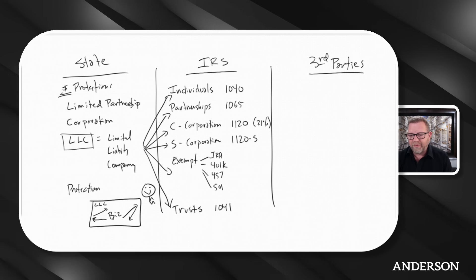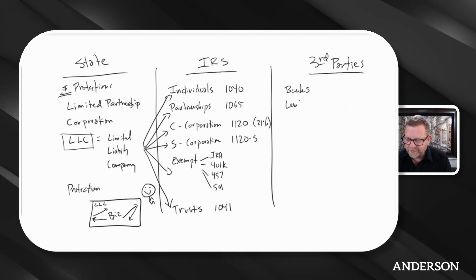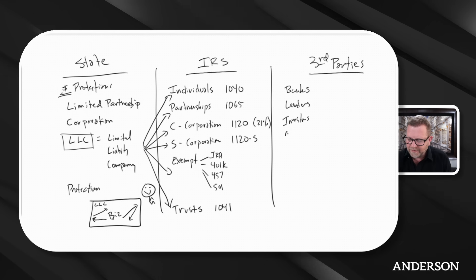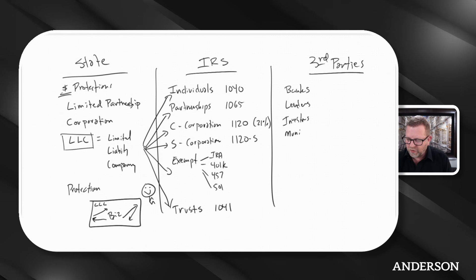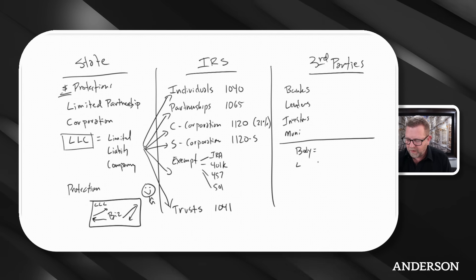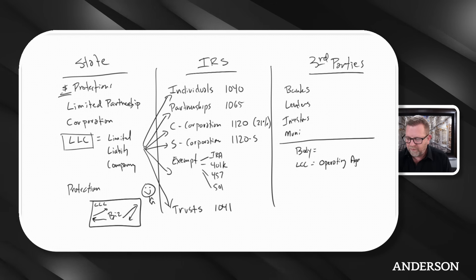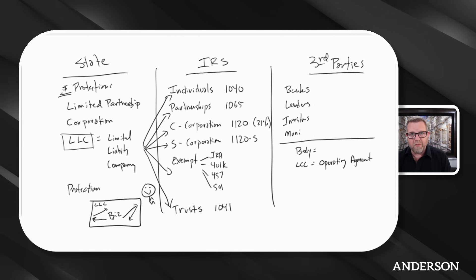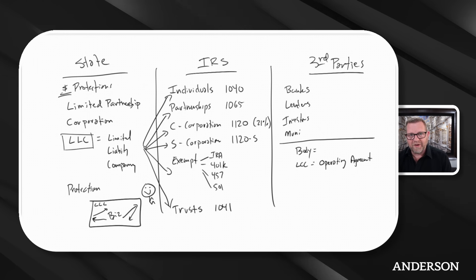Third parties — who are we talking about? Banks, lenders, investors, municipalities for business licensing, and other businesses. What they're going to want to see is your governing agreement. If it's an LLC, that's called an operating agreement. You never want to leave these things to chance — you've got to document. In an LLC, owners are called members, managers are called managers, and you have to choose whether you'll be managed by your members or your managers.